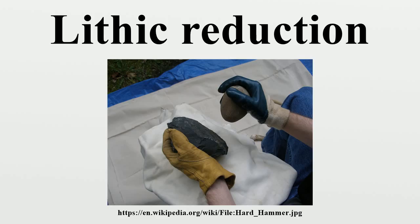Lithic reduction may be performed in order to obtain sharp flakes, on which a variety of tools can be made, or to rough out a blank for later refinement into a projectile point, knife, or other object. Flakes of regular size that are at least twice as long as they are broad are called blades. Lithic tools produced this way may be bifacial or unifacial.